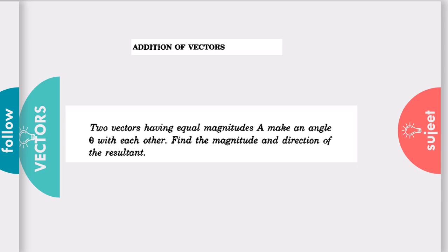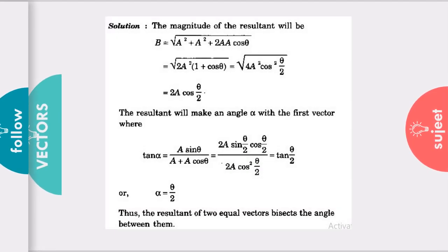Let's see the solution. The magnitude of the resultant is: first vector squared, second vector squared, and the product of the two vectors twice with cosine of theta, taking the square root. With this we get 2A cos(θ/2). You can pause the video and note down the solution if you like.